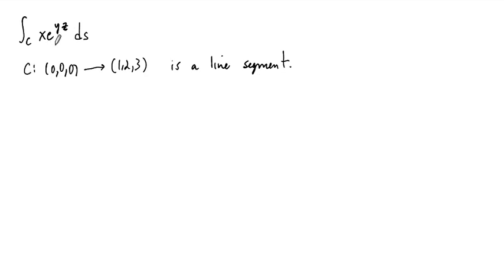So the integrand here is x e to the yz, and the curve itself is just a portion of a line, so a line segment between the origin and the point 1, 2, 3.